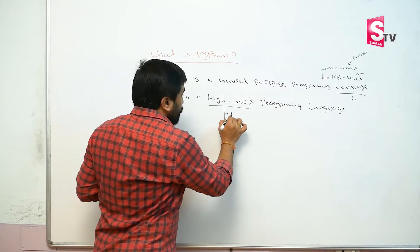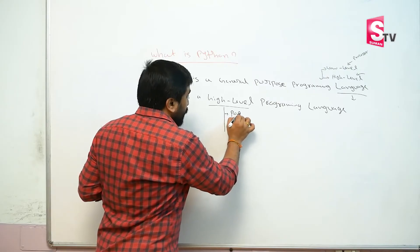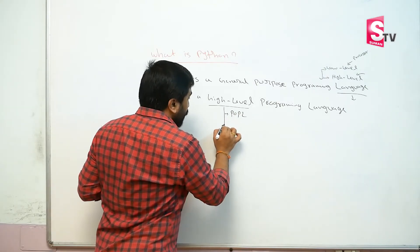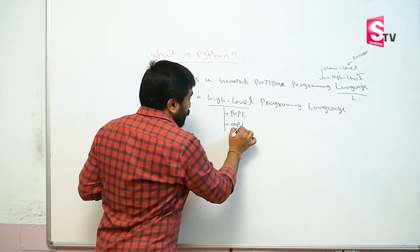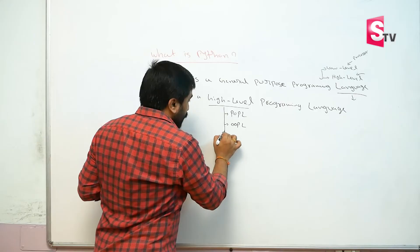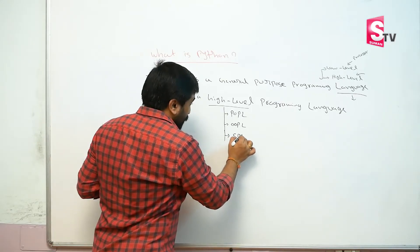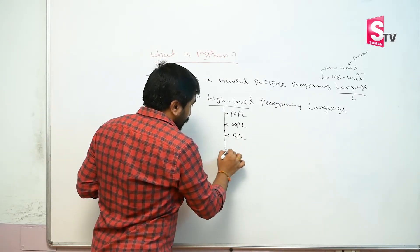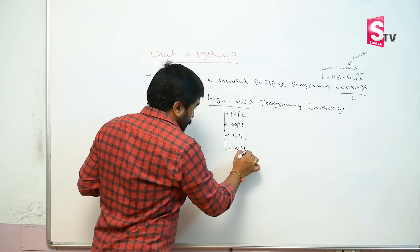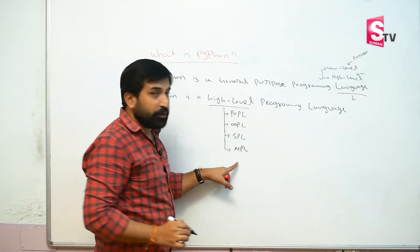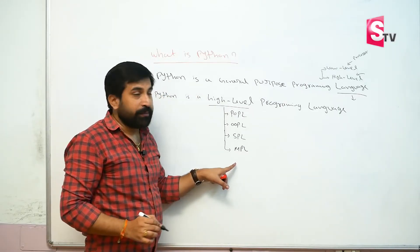The high-level programming languages are divided into four types. First one: procedure-oriented programming languages. Second one: object-oriented programming languages. Third one: scripting programming languages. And fourth one: modular programming languages.